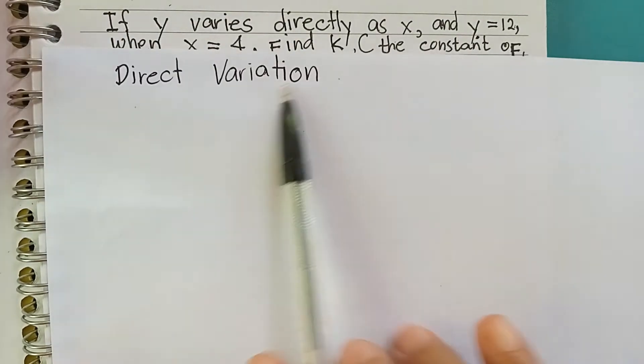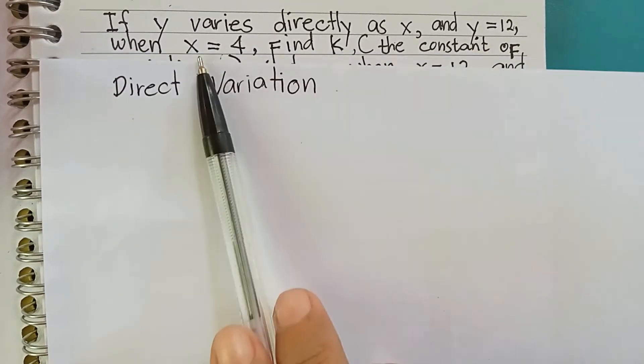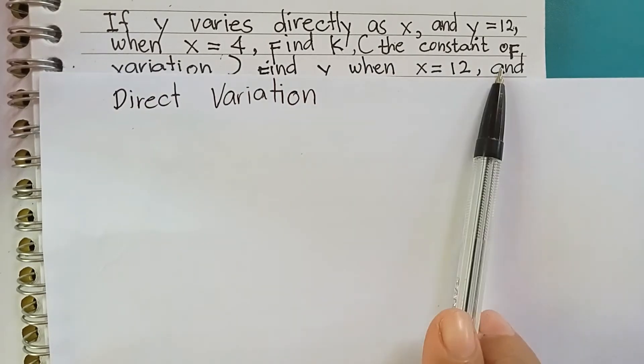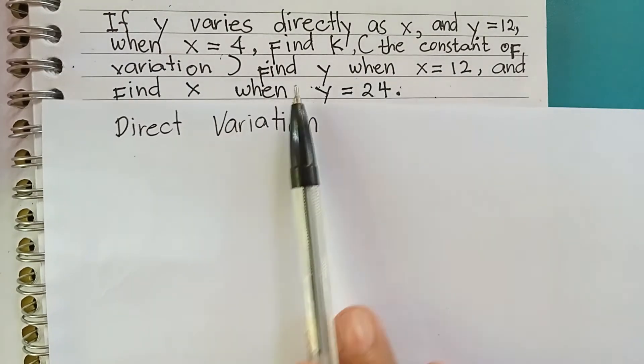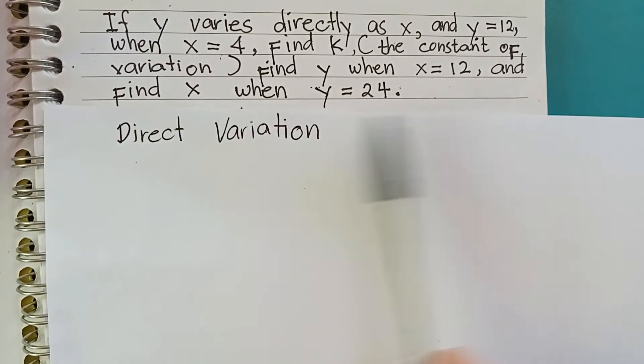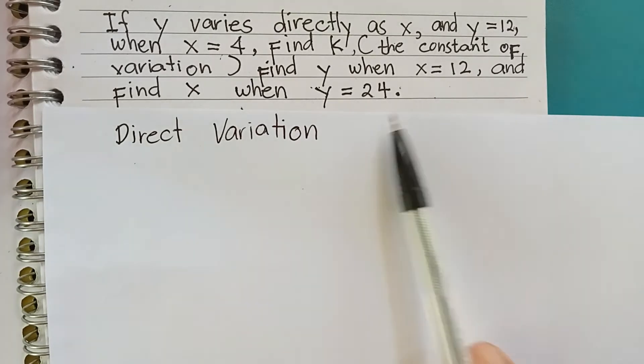If y varies directly as x, and y equals 12 when x is 4, find k, the constant of variation, find y when x equals 12, and find x when y equals 24.